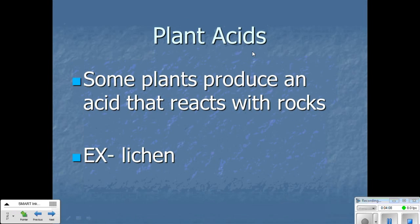And then plant acids. Some plants produce an acid that reacts with rocks. And the example is lichen. That's how you pronounce that word, lichen. It grows on rocks and it sort of eats away at it, kind of like a mold.